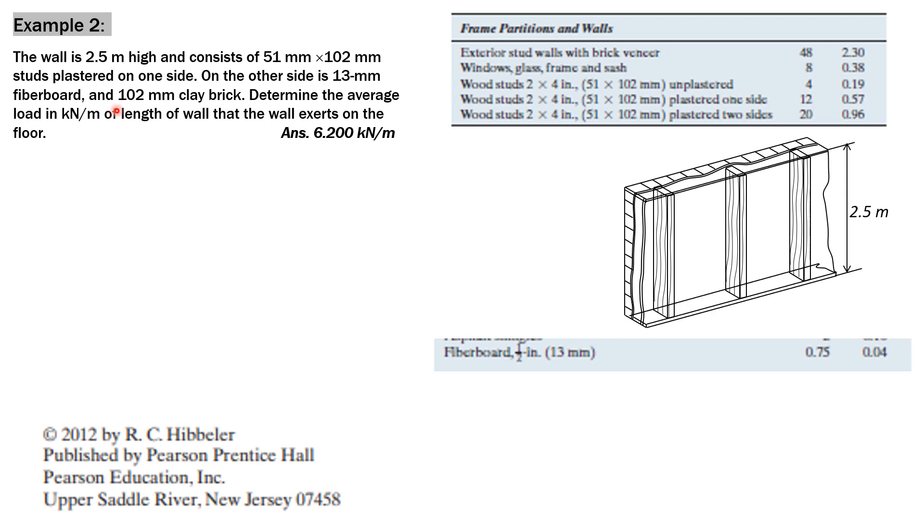Lastly, we have 102 mm clay brick. That's 4 inches thick clay brick. For walls, we have 102 mm clay brick. It is 1.87.